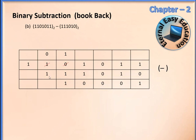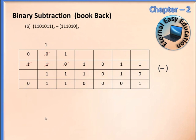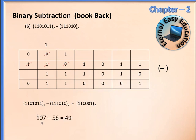Here it is 0 minus 1 again, so I have to borrow: this 1 turns to 0 and is given here. The number is now 1 and the below number is 1, so the difference is 1, and here the difference is 0. So 1101011 minus 111010 equals 110001. Converting to decimal: 1101011 is 107, 111010 is 58, and 107 minus 58 equals 49.